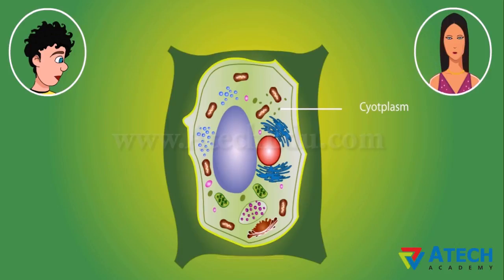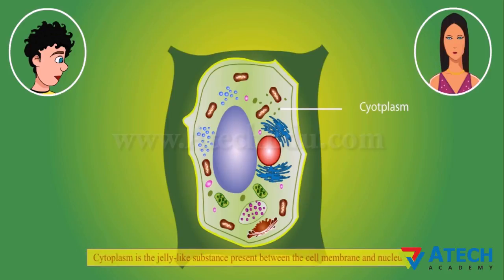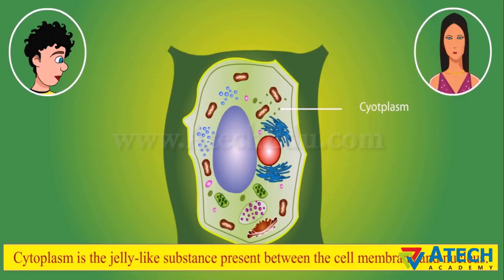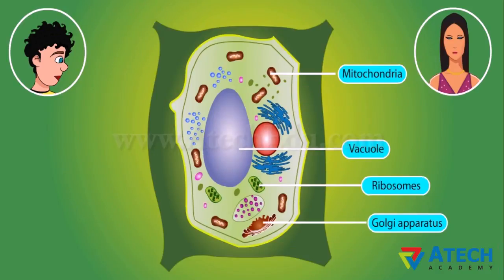Cytoplasm is the jelly-like substance present between the cell membrane and nucleus. Various other components or organelles of cells are present in the cytoplasm. These are mitochondria, Golgi apparatus, vacuole, and ribosomes.